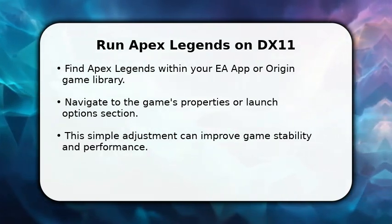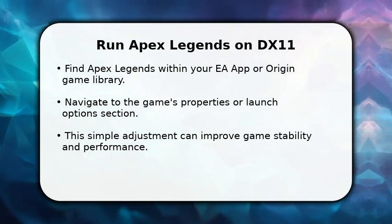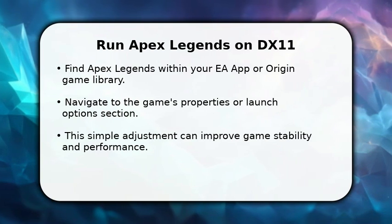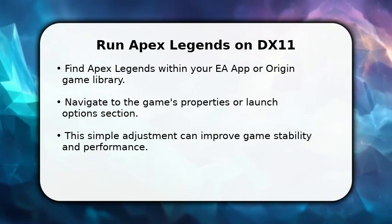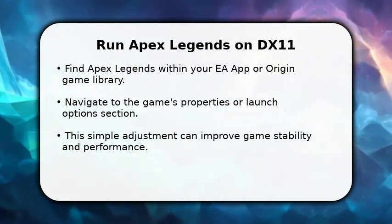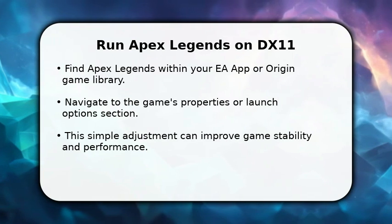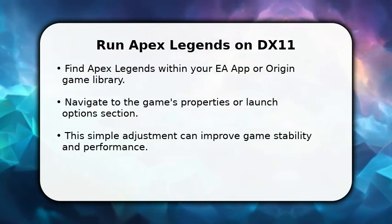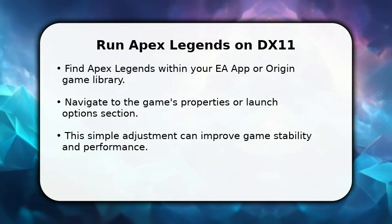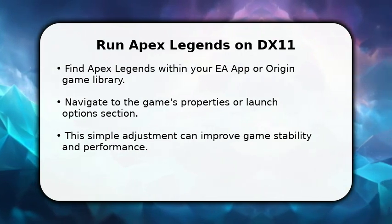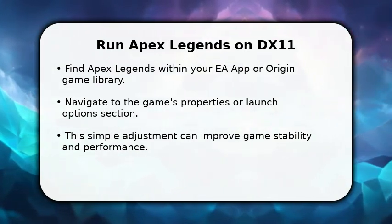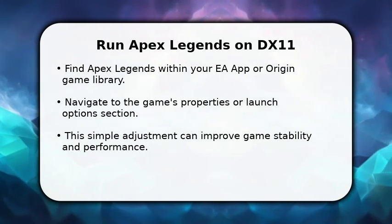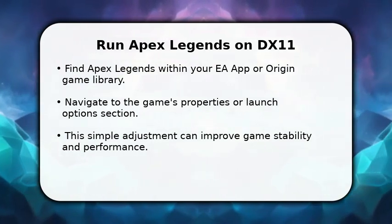First, open your EA app or Origin client and locate Apex Legends in your game library. Once you find it, right-click on the game or select the gear icon to access its properties. This is where we will input a specific command to ensure the game utilizes DirectX 11, potentially offering a smoother experience for many players.